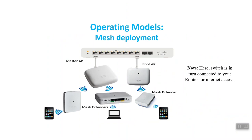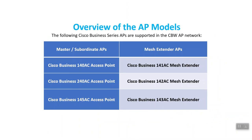There is a variety of Cisco Business Series APs supported in the Cisco Business Wireless Network. Under the master and subordinate APs, these include the Cisco Business 140AC, 240AC, and 145AC access points. Mesh extender APs include the Cisco Business 141AC, 142AC, and 143AC mesh extenders.